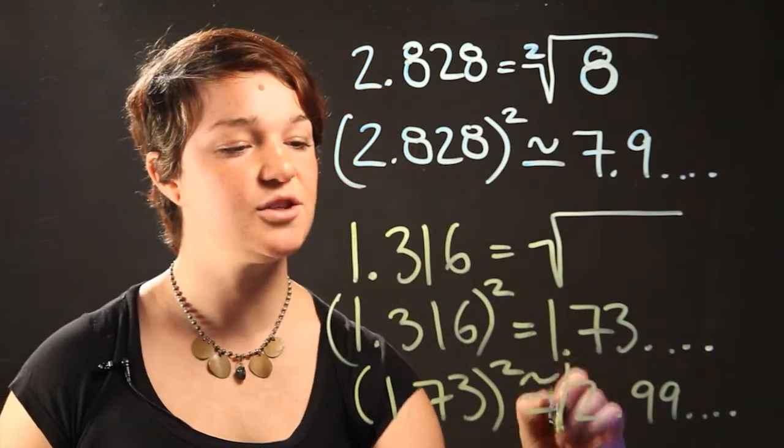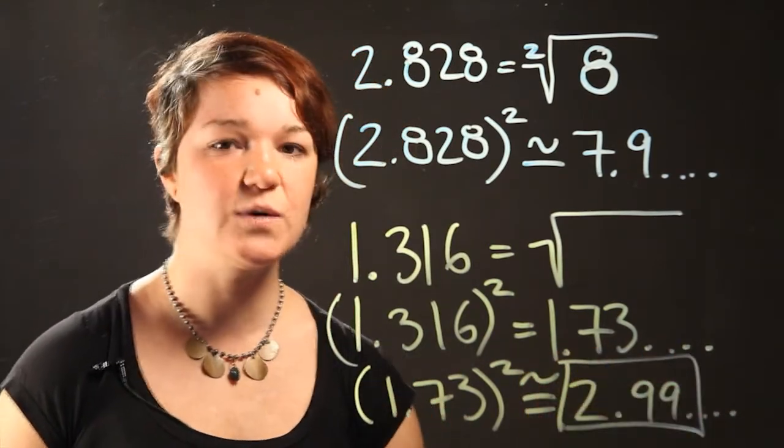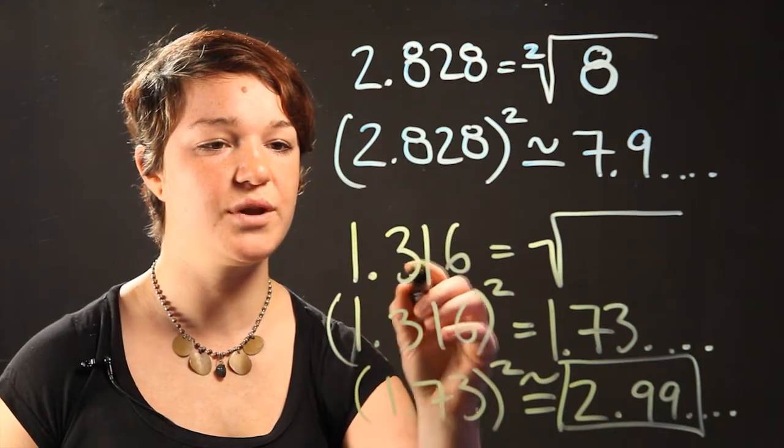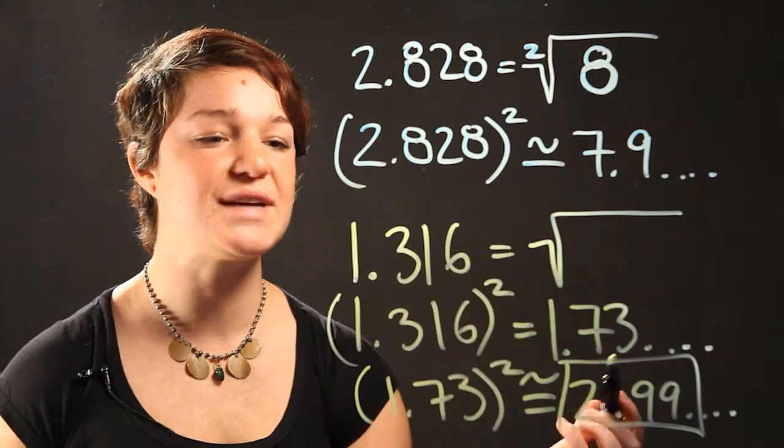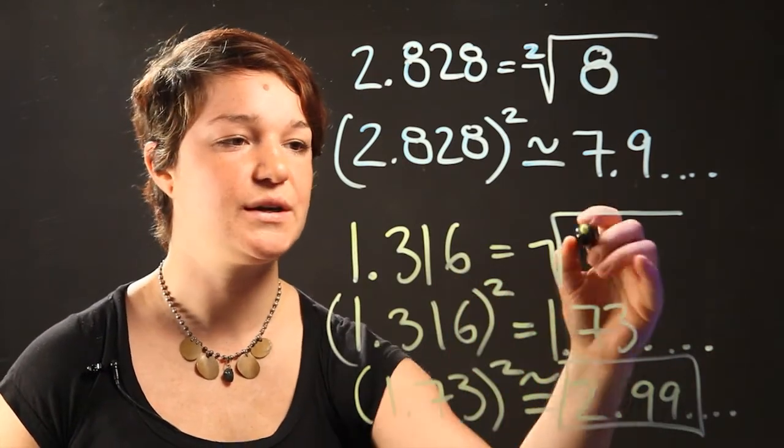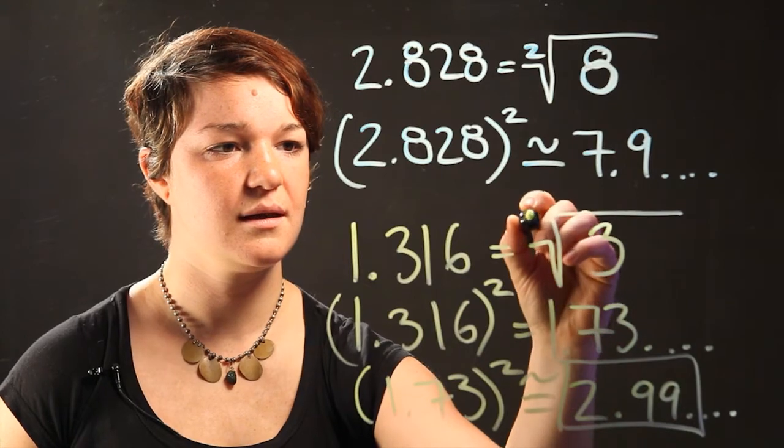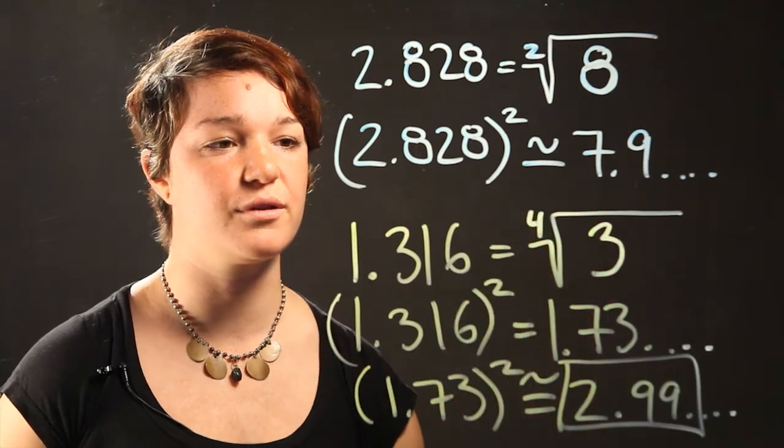In this case 2.99 is close enough to 3 that we know that 1.316 had to be multiplied by itself 4 times in order to get 3. So the radicand is 3 and it's a fourth root.